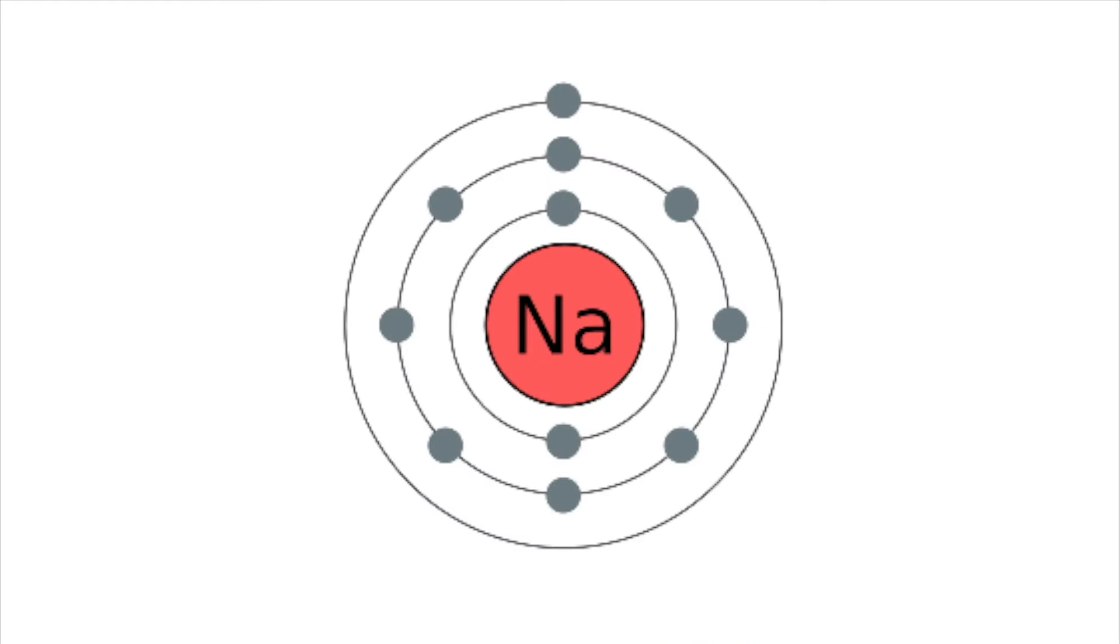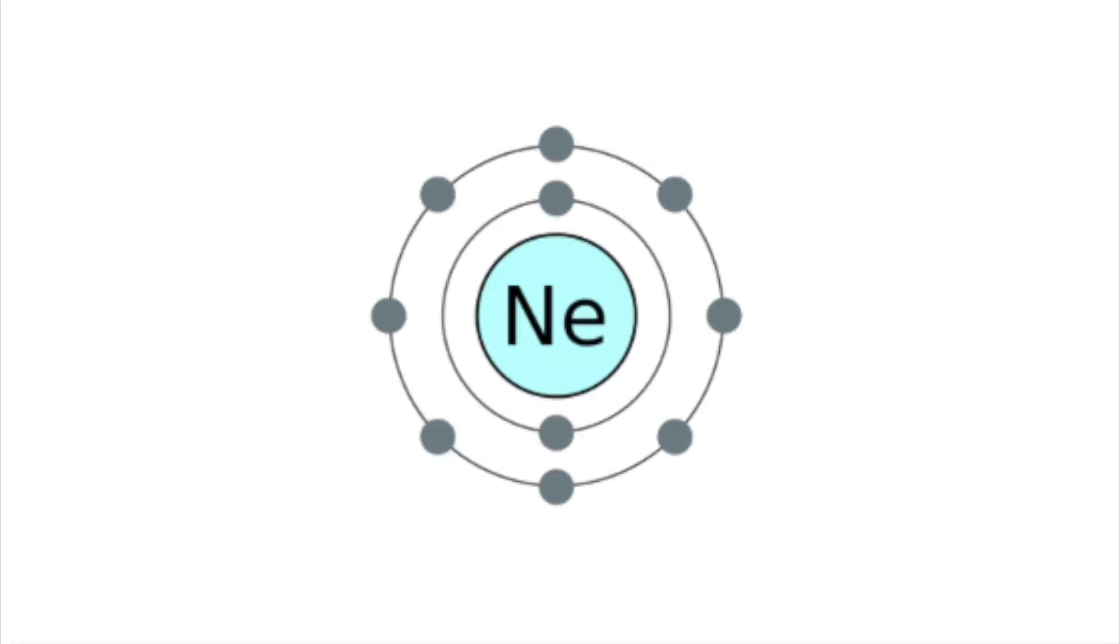Some atoms form positive ions. Sodium is an example of this. It is from group 1 and has an electronic structure of 281. It loses one electron and is left with the stable electronic structure of neon which has a structure of 28. However, it is also left with one more proton than electrons so it becomes positively charged by plus 1. The formula for sodium ion is written as Na+.